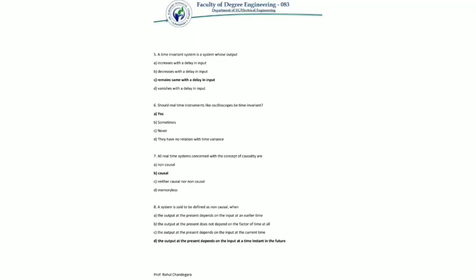The eighth MCQ: a system is said to be defined as non-causal when — the answer is the output at the present depends on the input at a time instant in the future. This is directly the definition of non-causal.